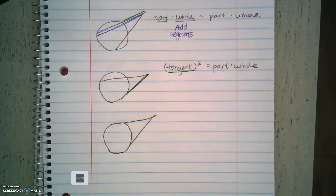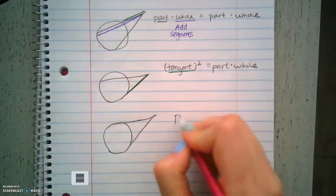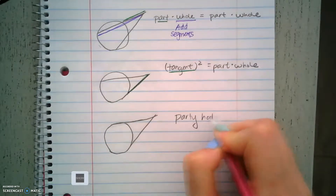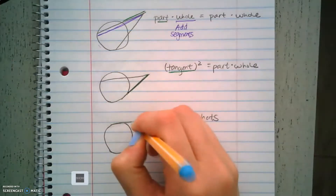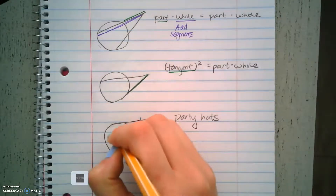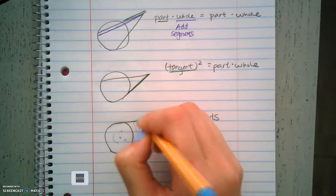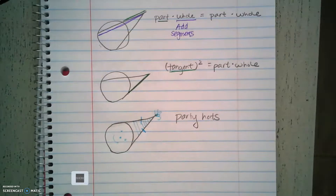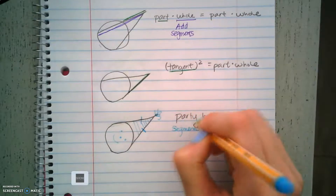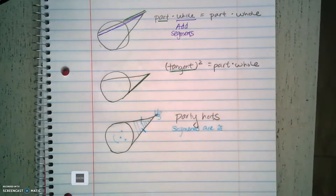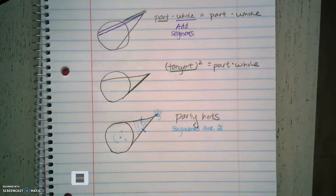Another type is two tangents. Remember we call these party hats — we call them party hats because we can decorate them; these two segments are equal and you can put a little face in the circle. The key thing to remember is the segments are congruent — they're equal to each other.